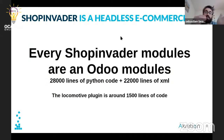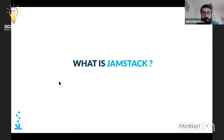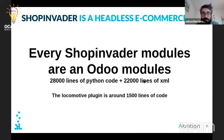ShopInvider is a headless e-commerce, so every ShopInvider module is an Odoo module — nothing more, nothing less. If you look at the lines of code, it's almost all Python and XML. The Locomotive plugin is not really big — it's a small plugin.